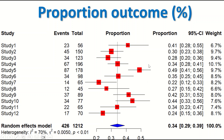The second part is the diagrammatic representation of these descriptive data. The red square represents the effect size estimate, which is the proportion. There is a variation in the size of the square reflected by the sample size or weight percentage. The horizontal line represents the 95% confidence interval, and the vertical line is the line for the overall or pooled effect size. The diamond-shaped structure is the overall estimated effect size, i.e., the pooled proportion.